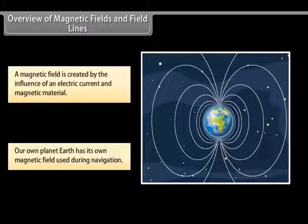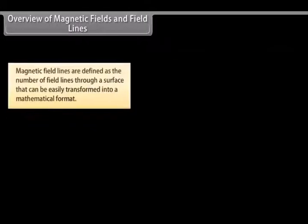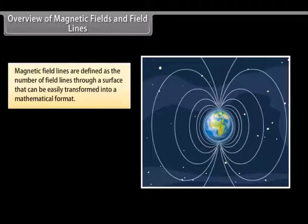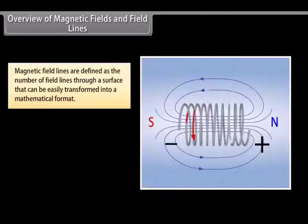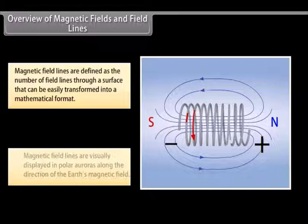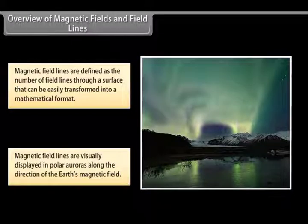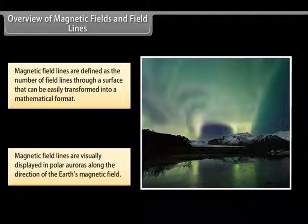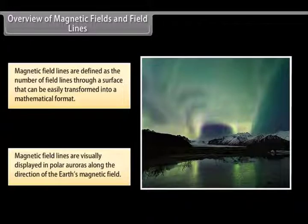Magnetic fields are also used in electric devices such as transformers. Magnetic field lines can be compared to the constant altitude lines that are visible on a map. Magnetic field lines help in stating simple concepts of magnetism easily. These are defined as the number of field lines through a surface. These can be easily transformed into a mathematical format. Magnetic field lines are visually displayed in polar auroras, where visible streaks of lines are created along the direction of Earth's magnetic field.